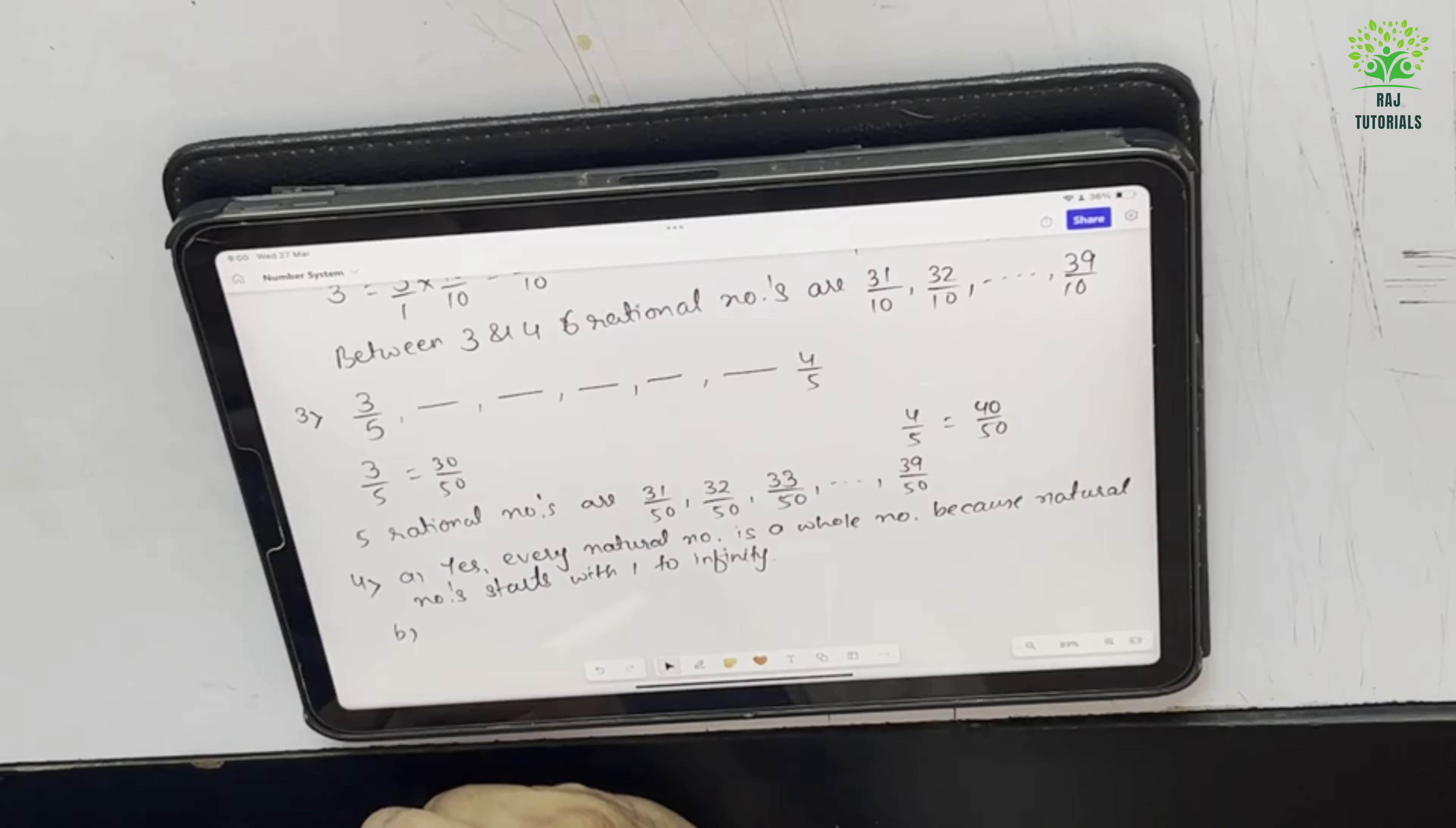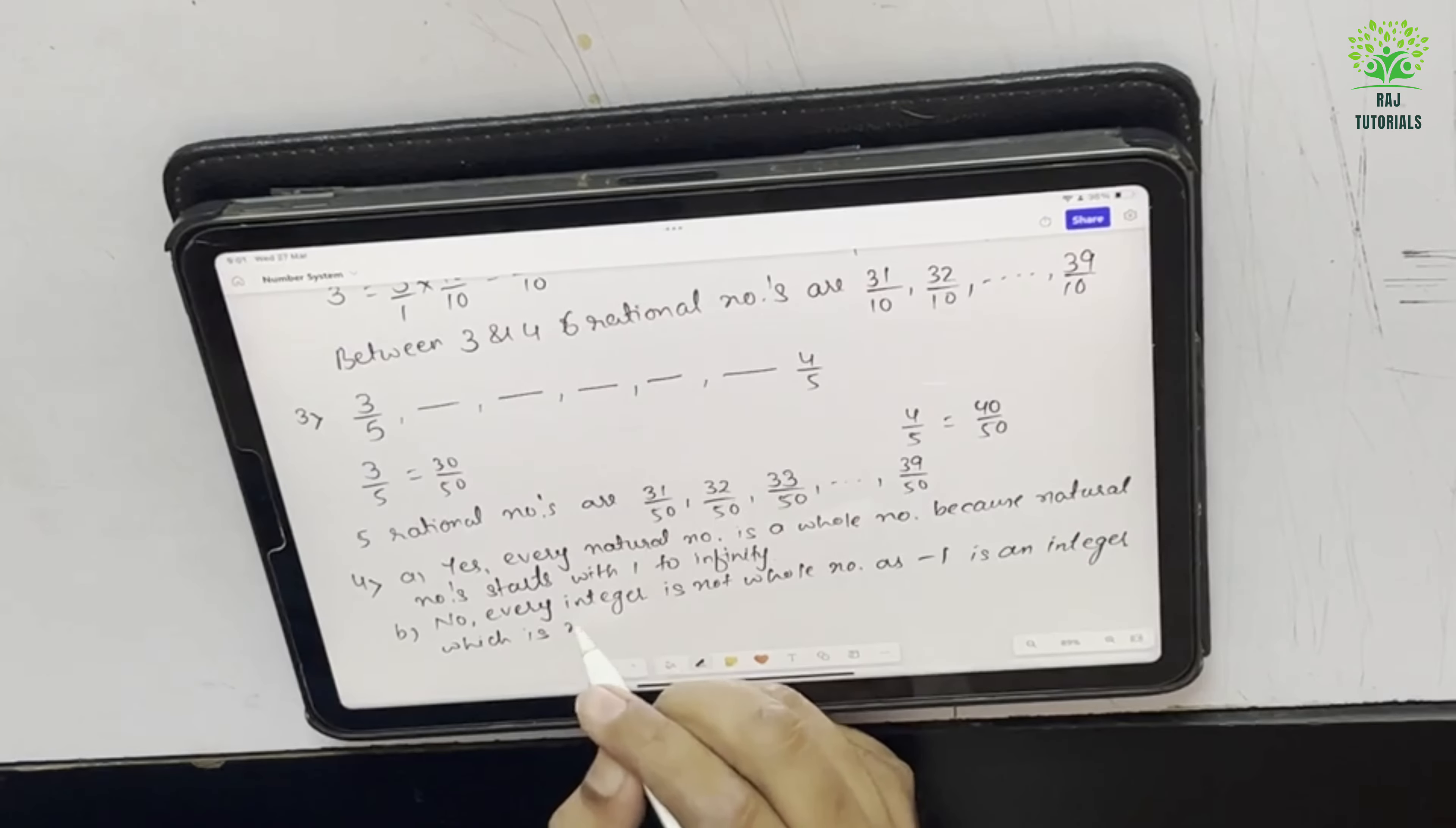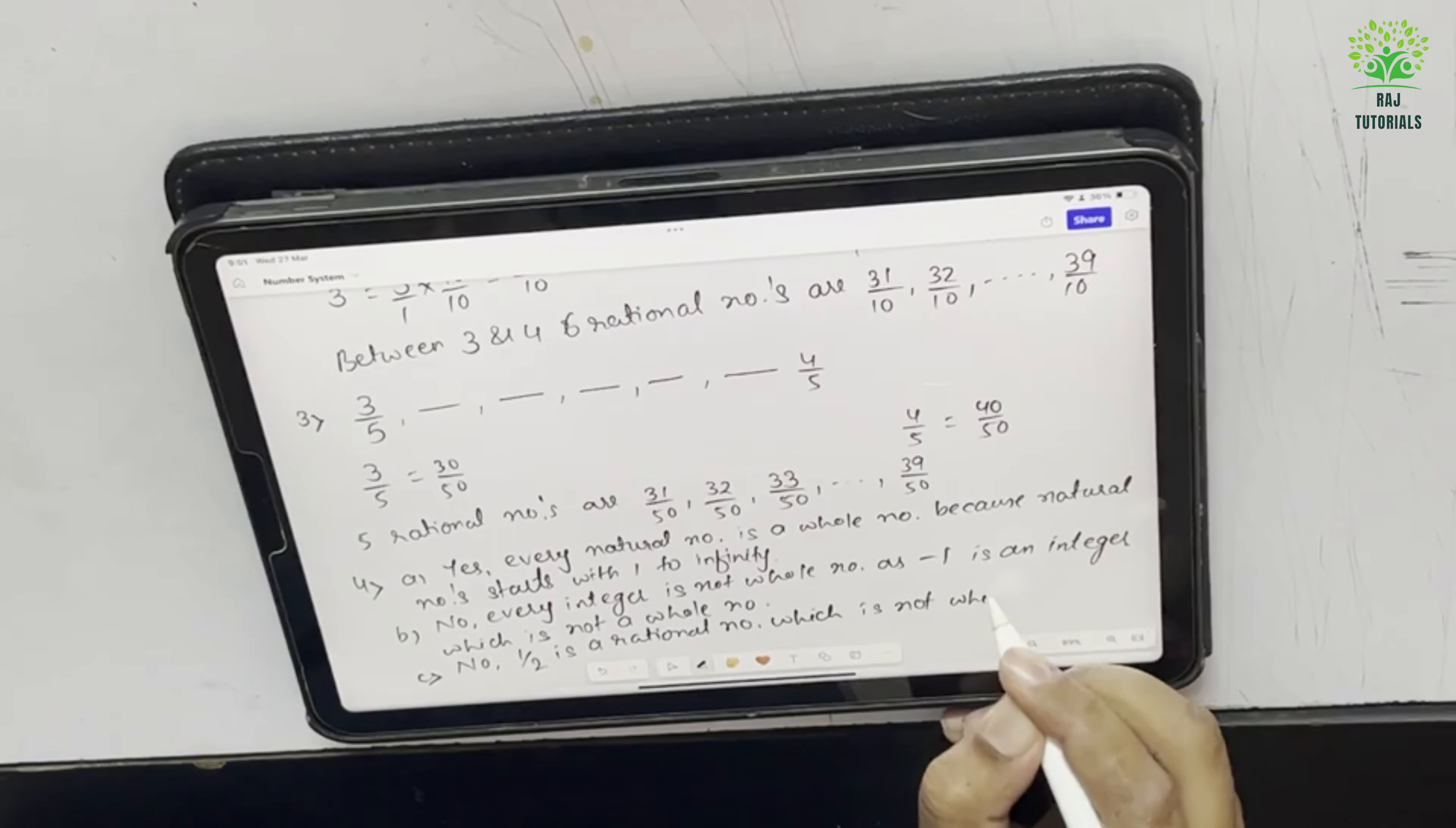Now B says every integer is a whole number. No, every integer is not whole number as minus 1 is an integer which is not a whole number. And 1 by 2 is a rational number which is not whole. So here we end exercise 1.1.